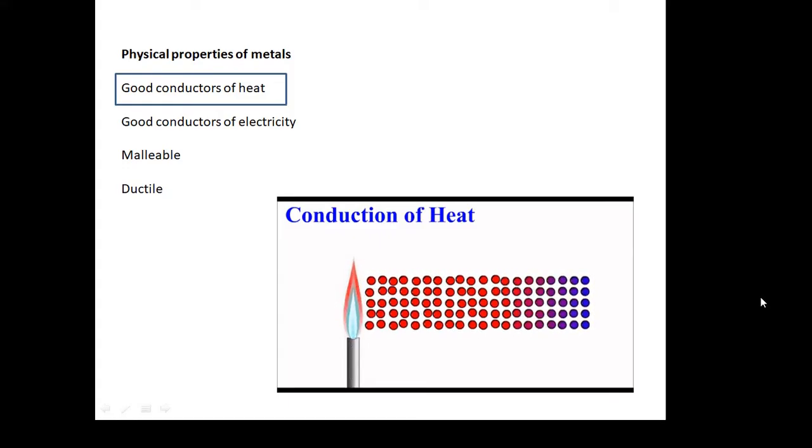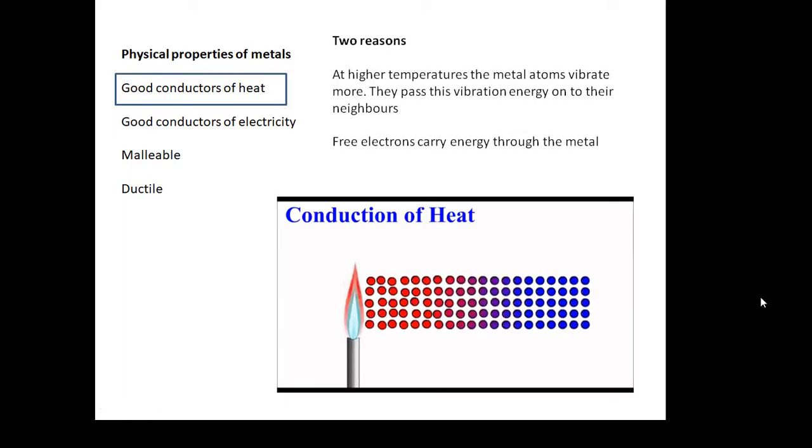Why are they good conductors of heat? There are two reasons. Firstly, all the atoms are in rows—they're regularly arranged and close together. If they start vibrating at one end, this energy will be passed on to their neighbors, transferring through the metal from atom to atom. The other reason is the free electrons, which can whizz around and carry energy through the metal.